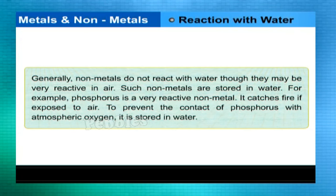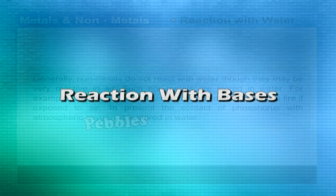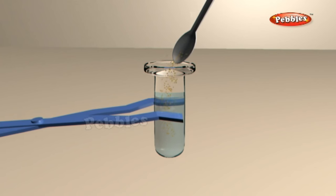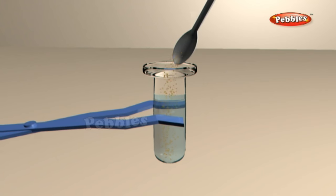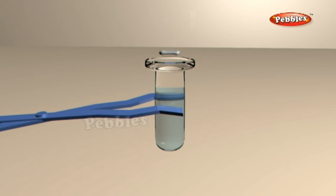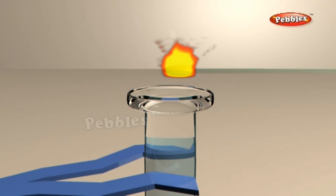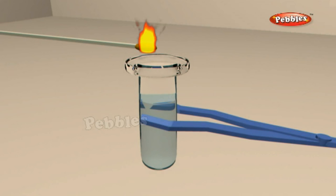For example, phosphorus is a very reactive non-metal — it catches fire if exposed to air. To prevent contact of phosphorus with atmospheric oxygen, it is stored in water. Prepare a fresh solution of sodium hydroxide in a test tube by dissolving three pellets in 5 ml of water. Drop a piece of aluminium foil into it and bring a burning matchstick near the mouth of the test tube. A pop sound is produced, indicating the presence of hydrogen gas. Metals react with sodium hydroxide to produce hydrogen gas.